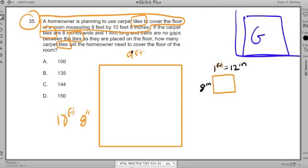We're going to place this tile on the floor. Now my flooring has measurements of nine feet and ten feet and eight inches. Now each one of my tiles is one foot by eight inches. So how am I going to place this tile? I've got to place it in a certain way so there are no cracks.